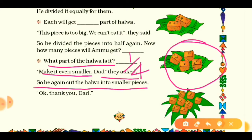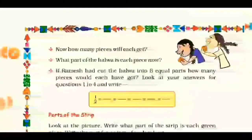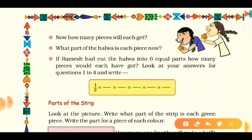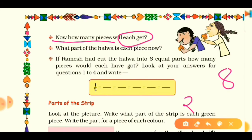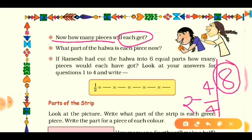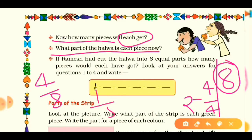They asked to make it even smaller, so Ramesh cut the halwa into smaller pieces again. Now we have a total of eight small pieces. There are eight pieces and two children, so each will get four out of eight parts — written as four upon eight. Each individual small piece is one upon eight of the whole halwa.